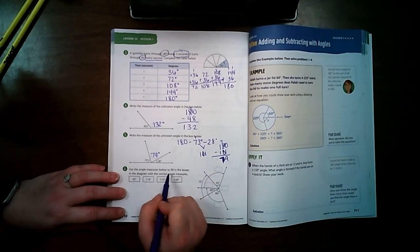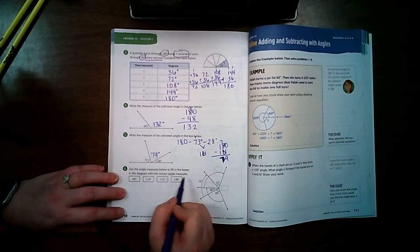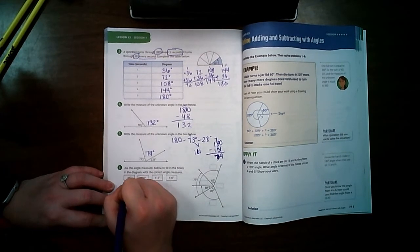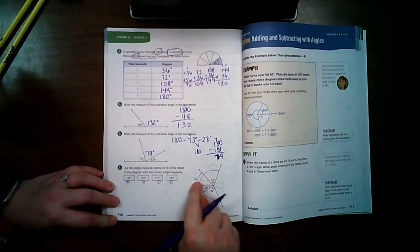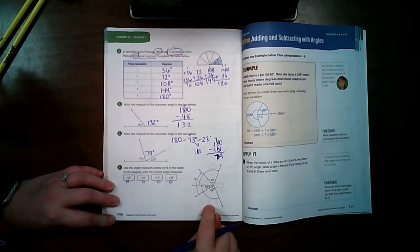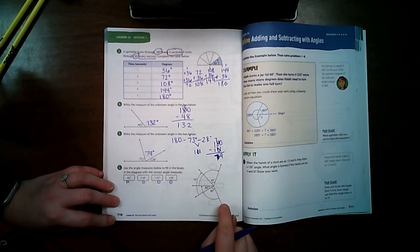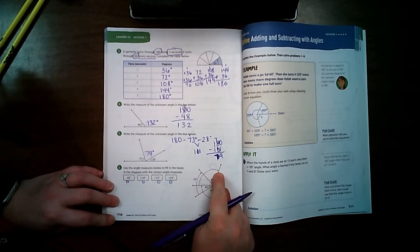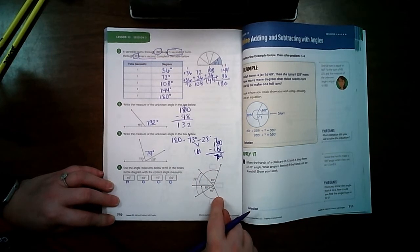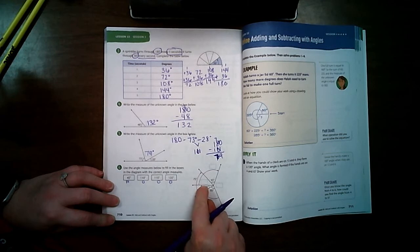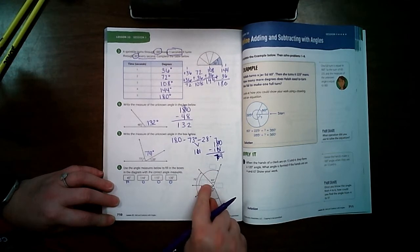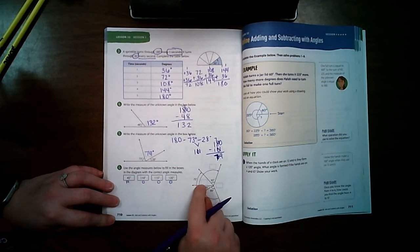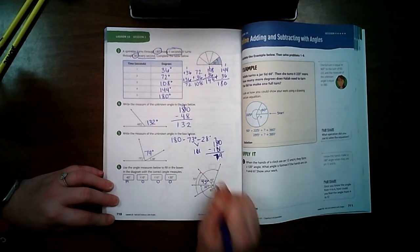Use the angle measures below to fill in the boxes in the diagram with the correct angle measures. All right, so first I'm going to label acute, obtuse, obtuse, obtuse, obtuse. So there's only one angle here that's acute, and I've got to figure out which one that's going to be. So this right here from that to that, that is obviously not an acute angle. This one right here from here to here, nope that's not an acute angle. So that means it must be this angle right here from this black line to that black line. So that means this one's going to be 45 degrees right there.